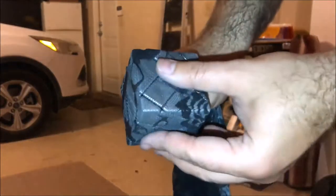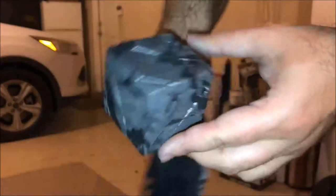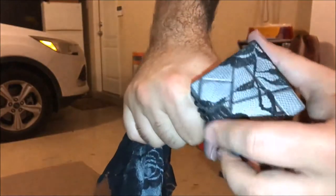And so we wrap it around the cube, making sure to get one pyramid side, and then the trick is to kind of pull it super tight, trying to get all the wrinkles out here.